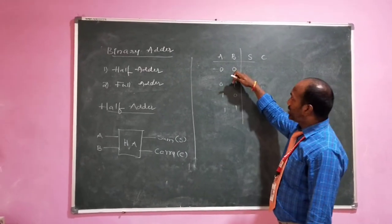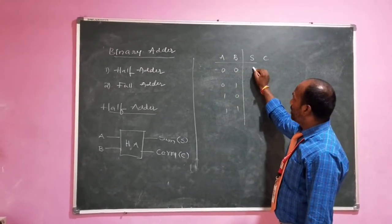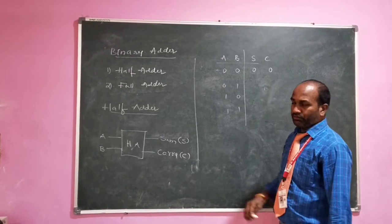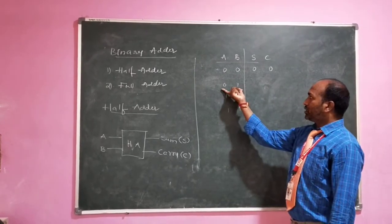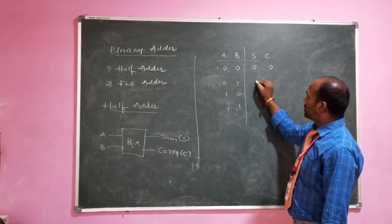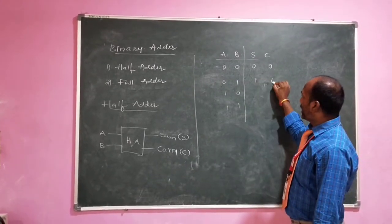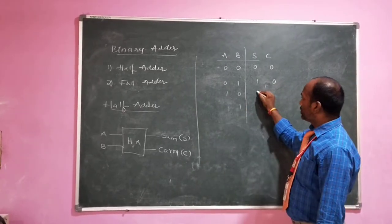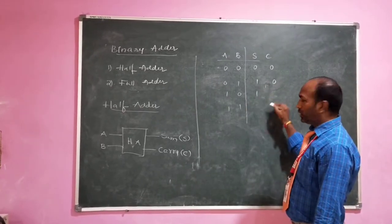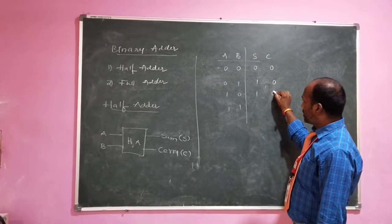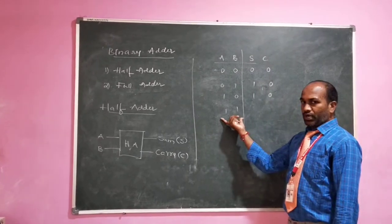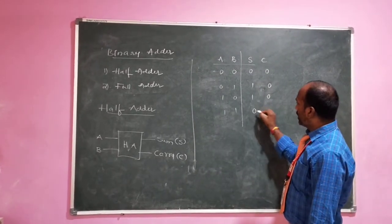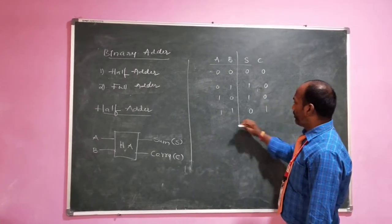When the inputs are 0 and 0, the sum is 0 and carry is 0. For combination 0,1: sum is 1, carry is 0. For combination 1,0: sum is again 1, carry is 0. But for combination 1,1: sum is 0 and carry is 1.